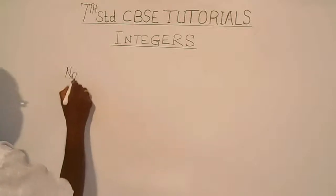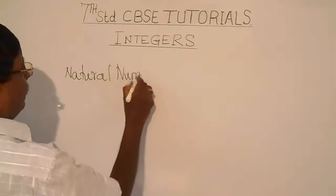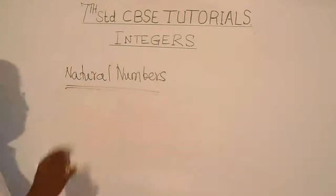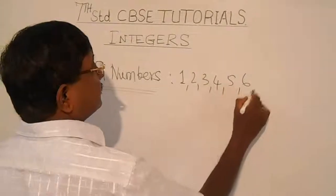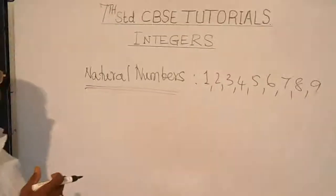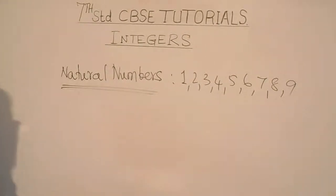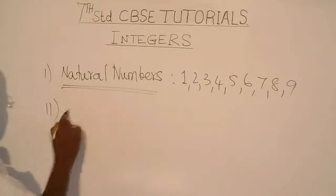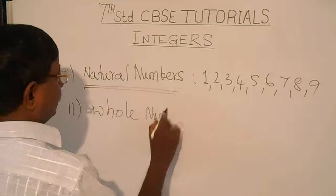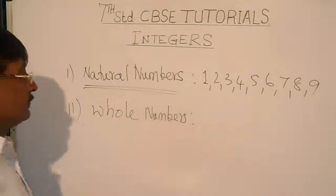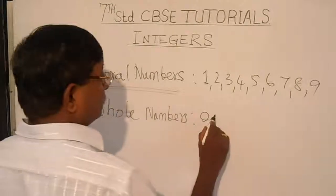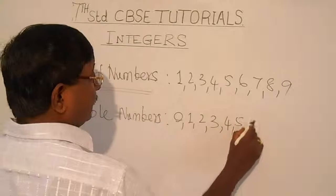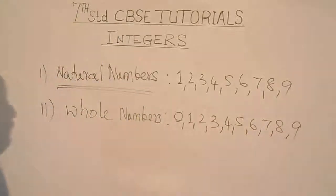What are natural numbers? The natural numbers are the counting numbers — one, two, three, four, five, six, seven, eight, and nine. These are the natural numbers. We can easily say that one, two, three, four — the counting numbers are called natural numbers.